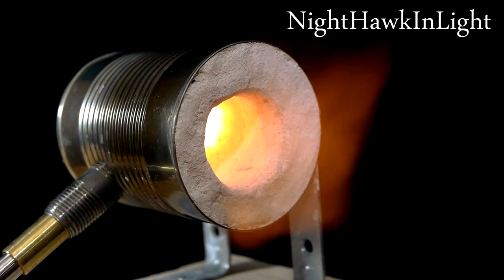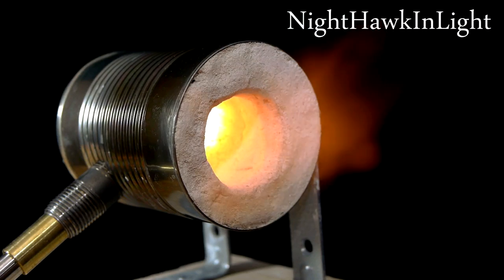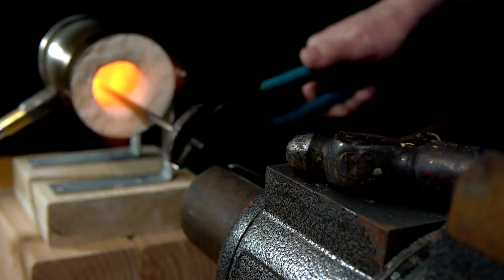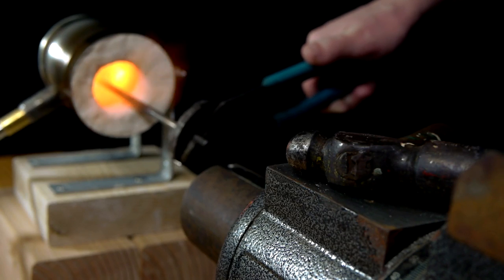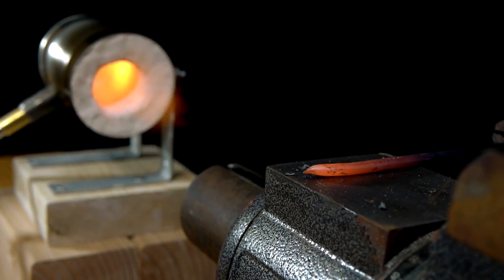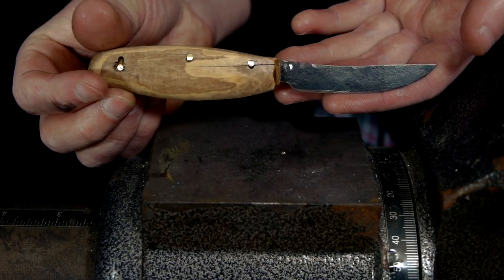This video will demonstrate how to make a simple and effective tabletop forge out of a soup can. Using this forge with no previous experience, it only took about an hour's work to hammer a section of quarter-inch plain steel rod into a rough but perfectly usable knife.